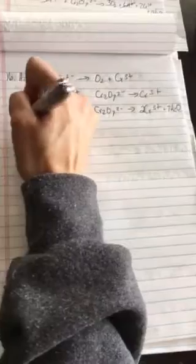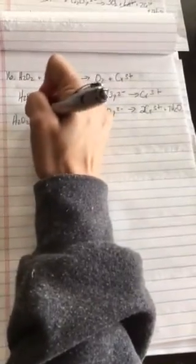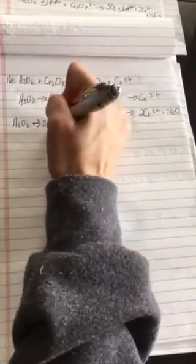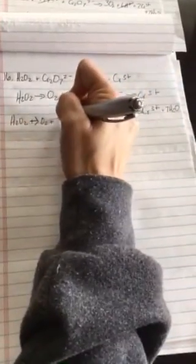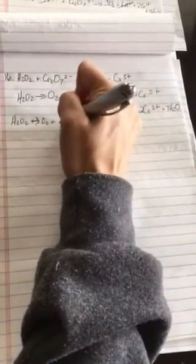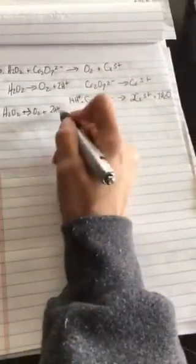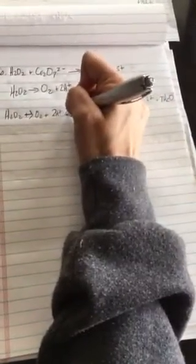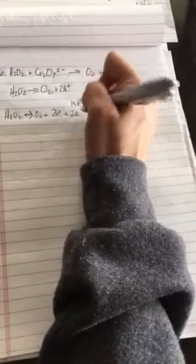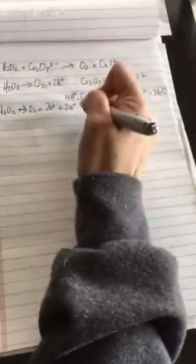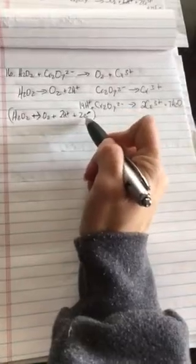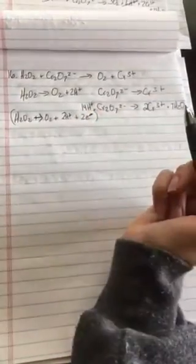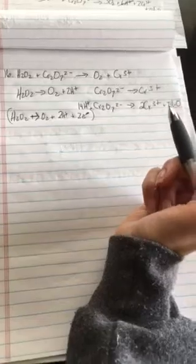I've got H2O2, I'm sorry this should be an arrow, produces O2 plus 2H+. So now I want to get this to zero, so I'm going to add two electrons. Let's take a look at this here now. So this is a minus sign. So two plus, two minus equals zero. And this side is an overall charge of zero. Alright, let's take a look at the other one.